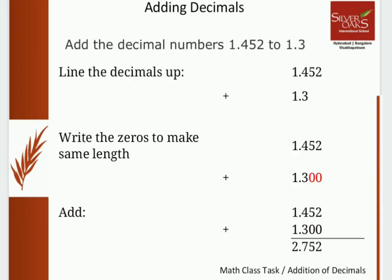Let us take an example of adding decimals. Add 1.452 to 1.3. Line the decimals up using the decimal point.